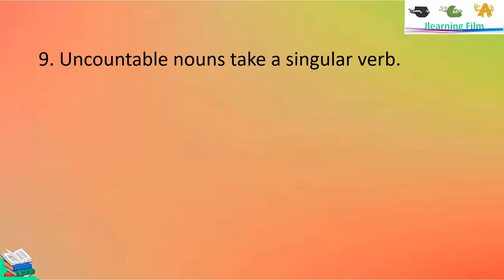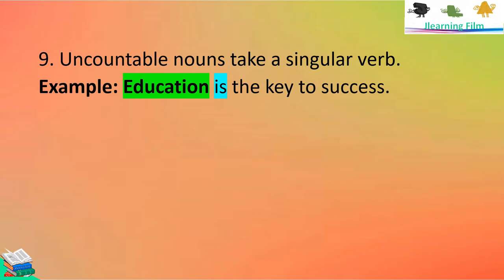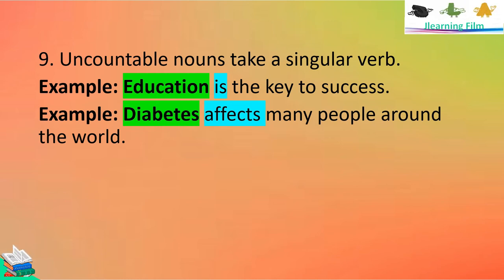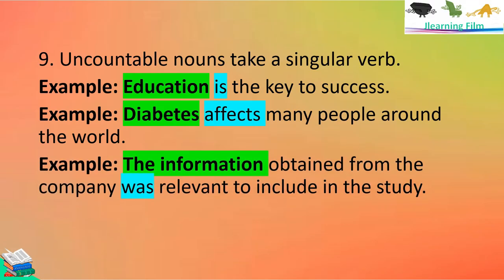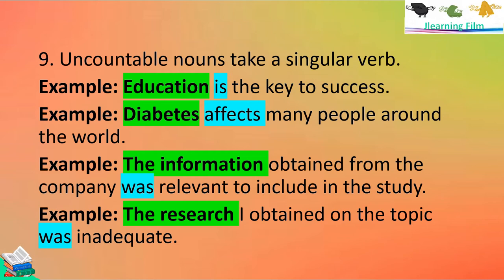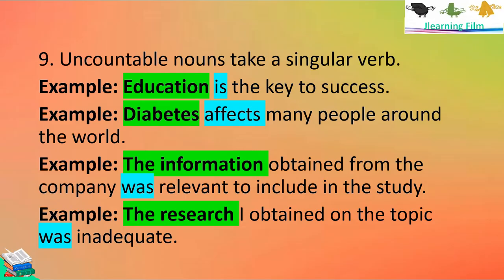Rule number nine: uncountable nouns always take a singular verb. For example, 'Education is the key to success.' Education is singular, therefore it takes a singular verb. Another: 'Diabetes affects many people around the world.' Diabetes is singular and uncountable, so it takes the singular verb affects. Also: 'The information obtained from the company was relevant to include in the study.' Information is an uncountable noun, so it takes a singular verb — was. Similarly, 'The research I obtained on the topic was inadequate.' Research is still uncountable, so it takes the singular verb — was.